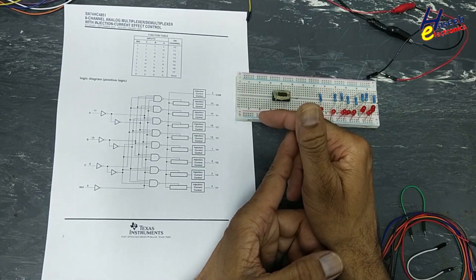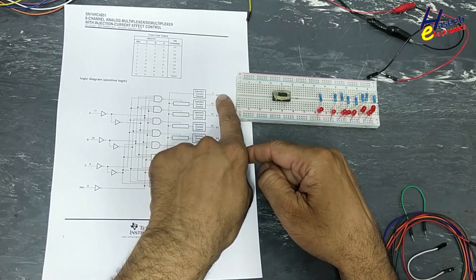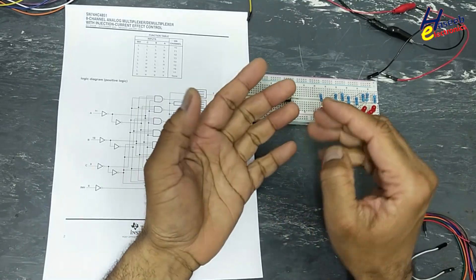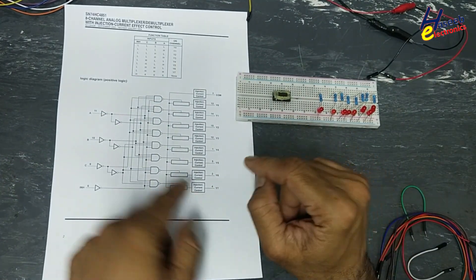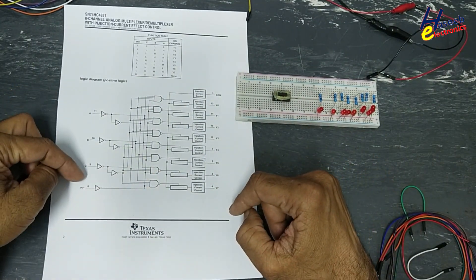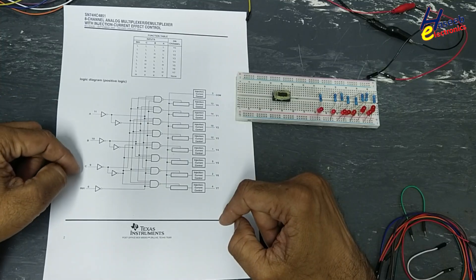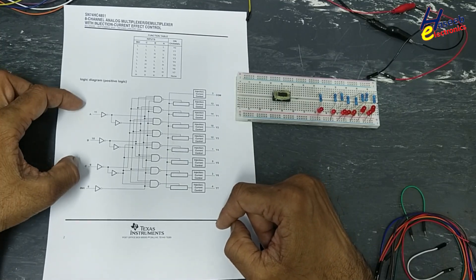The second use of this IC: we have one signal and we want to distribute that signal at a specific location that is being addressed, being selected by these control inputs, address inputs.